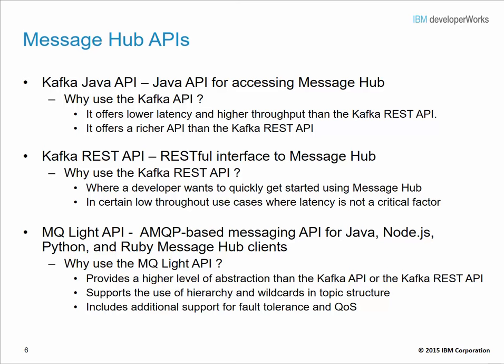Finally, there's the MQLite API. This is an AMQP-based messaging API for Java, Node.js, Python, and Ruby MessageHub clients. Some reasons to use the MQLite API include a higher level of abstraction than any of the Kafka APIs, support for hierarchies and wildcards in topic structure, and additional support for fault tolerance and quality of service — which we'll discuss in upcoming slides.